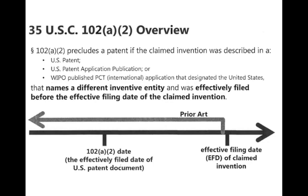And was effectively filed before the effective filing date of the claimed invention. So if somebody else did it before you did it, then you're out as well. Anything before the effective filing date — 102 A2 says that knocks you out. That's pretty straightforward.